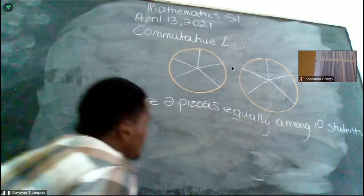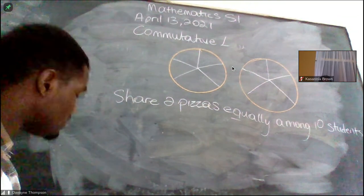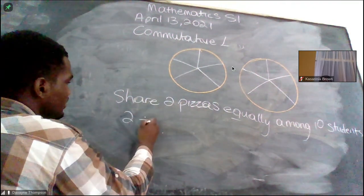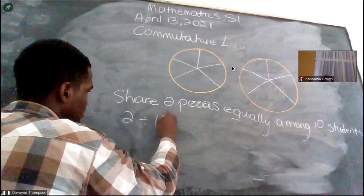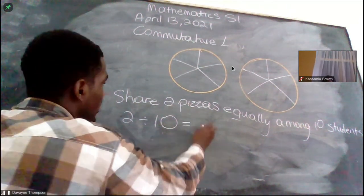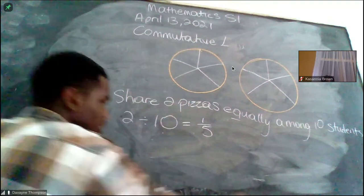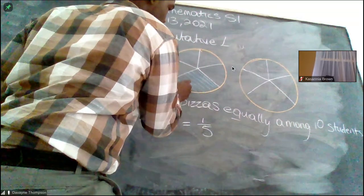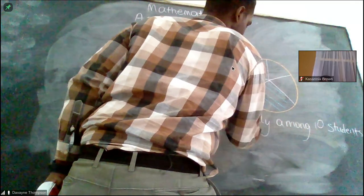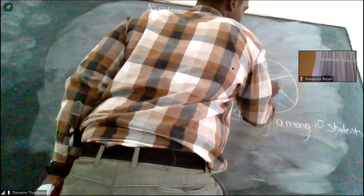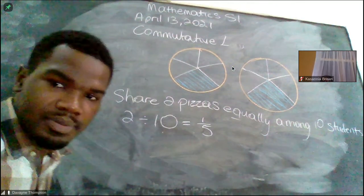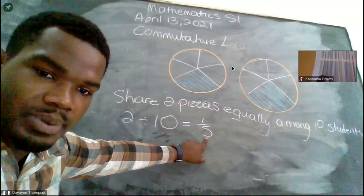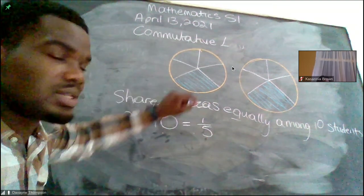How would we originally do this? Wouldn't we have said two divided by 10 students is equal to one-fifth? So in other words Emma would have gotten a slice, Khalil would have gotten a slice, and Jaziel would have gotten a slice. If we divide two pizzas by 10 persons, each person will get a fifth of the pizza. One-fifth of the pizza would be one slice.